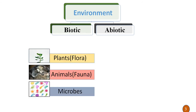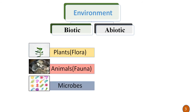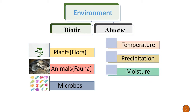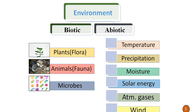The environment is broadly categorized into two components. The first is the biotic component and the second is the abiotic component. In the biotic component, plants (flora), animals (fauna) and microbes are the different biotic components of the environment. While in the case of abiotic components, temperature, precipitation, moisture, solar energy, atmospheric gases and wind are some examples of the abiotic component of the environment.